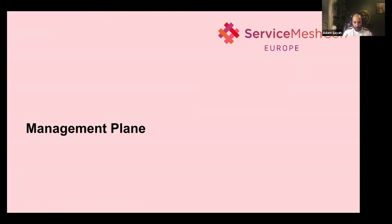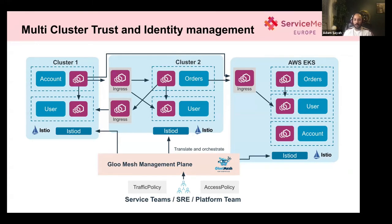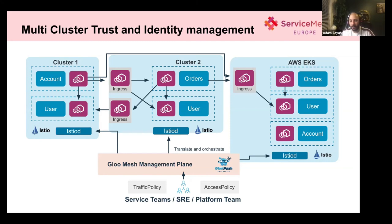To solve these issues, you need a management plane — a component that knows about all the service meshes, all the clusters, all the control planes, and is able to manage them all. In this use case, I'm taking Gloo Mesh as an example, which is a management plane that operates on multiple clusters. You register different clusters with your management plane, get a global view over all your services, and define policies in an easy way to route traffic between services.